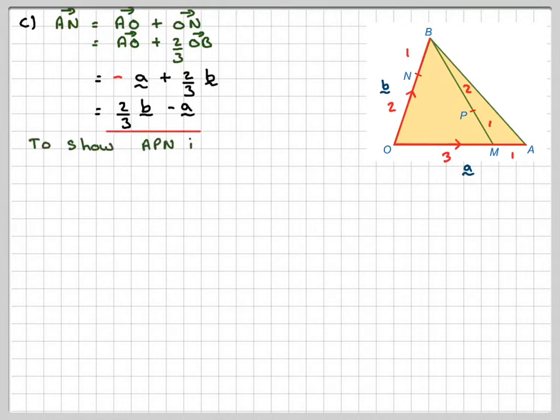We now have to show that APN is a straight line. We've already got one vector on that, which is AN. So if we now find the vector AP and show that AN is some multiple of AP, then we have shown that they lie on a straight line. So AP, going from A to P is the same as going A to M plus M to P.